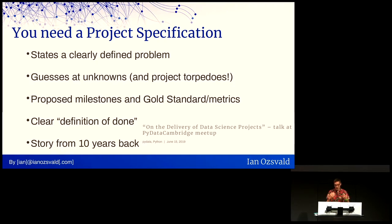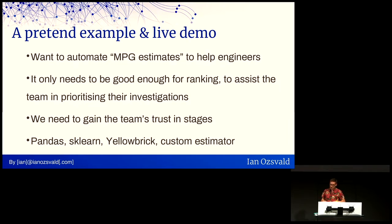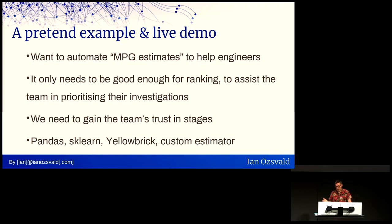Now we're going to do a short live demo written in a Jupyter notebook. Given Sylvain's lovely keynote, I've added some new bits to it. Here is my pretend example: we want to automate miles-per-gallon estimates from some engine statistics. I'm using the standard Auto-MPG dataset — it's a convenient standard dataset for this kind of problem.